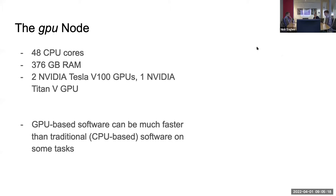As a brief introduction to the GPU node at JHPCE: it's a compute node at the cluster with 48 CPU cores, 376 gigabytes of RAM, and most importantly three different GPUs. Recently there's been more and more GPU-based software leveraging graphics processing units, because tasks can be very well parallelized on GPUs in a way that CPUs can't. For most users, certain software on certain tasks can be a lot faster.